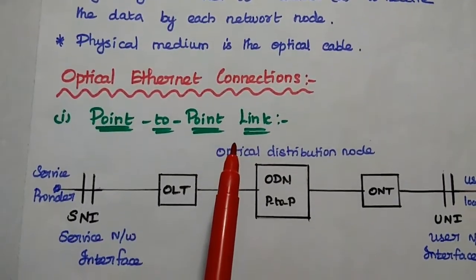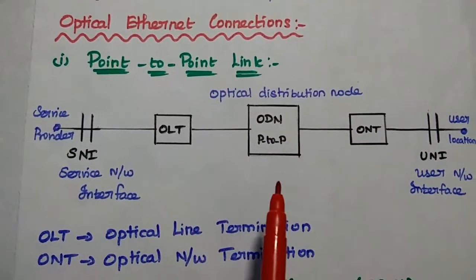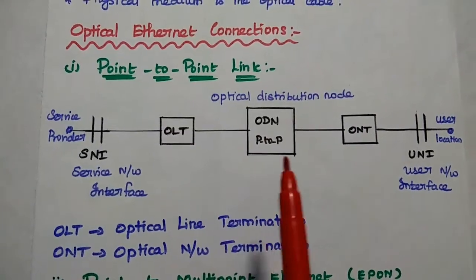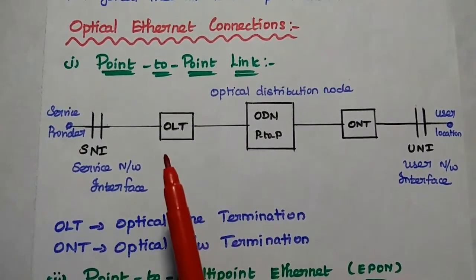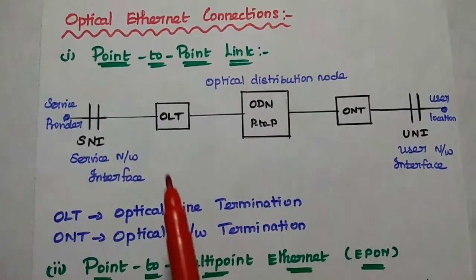It is the optical fiber cable in this optical Ethernet. So next optical Ethernet connection. There are different types of connections available. First one is point to point connection. Next one is point to multipoint connection.